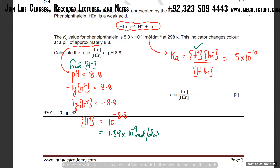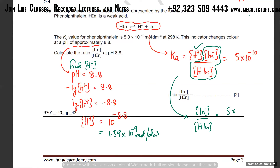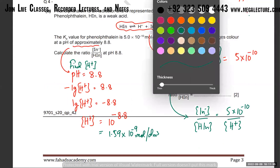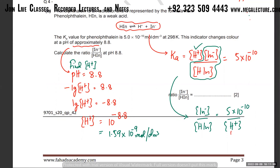We've found the H⁺ concentration. The question asks: calculate the ratio of [IN⁻] to [HIN]. All I need to do is rearrange Ka — Ka = [H⁺][IN⁻]/[HIN] — and get [IN⁻]/[HIN] = Ka/[H⁺]. That equals 5 × 10⁻¹⁰ divided by 1.59 × 10⁻⁹, which gives approximately 0.315.